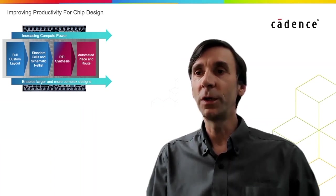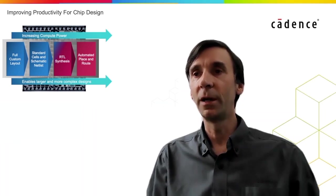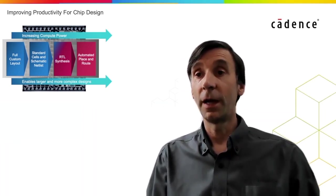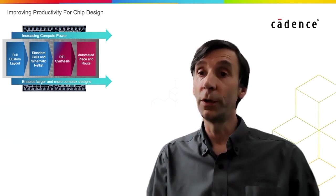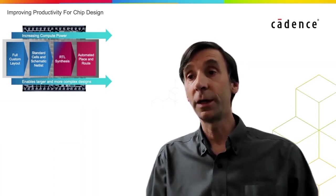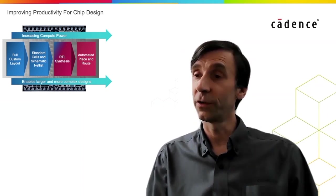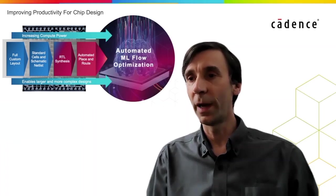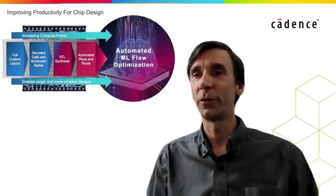During the past few years, two key technologies have become available, which will enable the next big leap forwards in chip design productivity. First, engineering teams have access to massive compute power, either on-premises or using cloud resources. Second, machine learning computer science has made significant progress and is now ready and available for electronic design automation. Both these technologies have enabled the next big leap forwards in chip design, automated machine learning driven flow optimization.